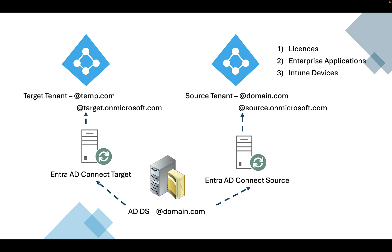My starting position was as follows: one Active Directory forest where all users use domain.com as part of their user principal name. Two Entra ID Connect servers were deployed, and every Entra ID Connect server synced users to their respective tenants. The two tenants had the same list of users but with a small difference. In the first tenant — which I named the source tenant — domain.com was registered and all users could use domain.com for authentication. A temporary domain was registered in the target tenant and all users had to use it for authentication. As you know, one domain name cannot be used for two tenants simultaneously.